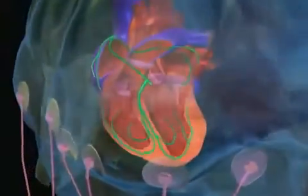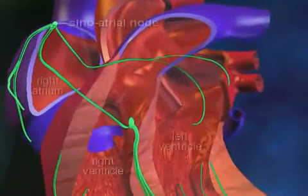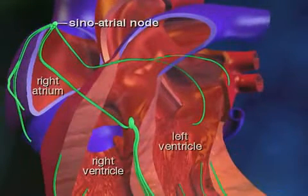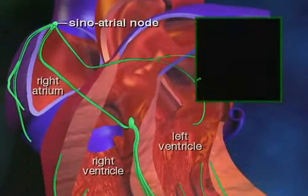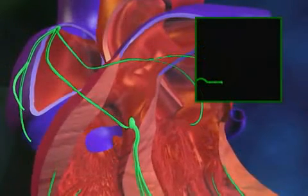In a normal heartbeat, the heart's signal follows a specific pathway through the heart. The signal begins in the sinoatrial node, or SA node, located in the right atrium. The SA node triggers the atria to contract, pushing blood into the ventricles.